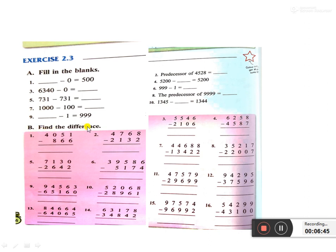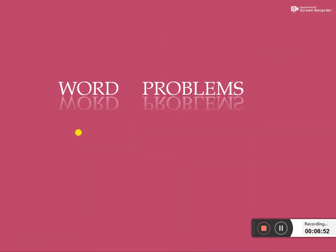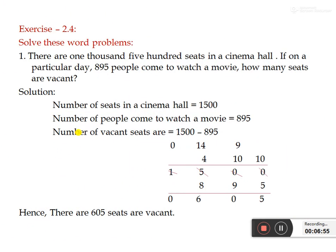Option B: find the difference — you have to do the subtraction. All the sums you have to do in your classwork copy, both A and B. Next, we are going to see word problems. Exercise 2.4 — all the word problems you have to do in your classwork copy. When you write, handwriting should be neat and clear. Exercise 2.3 and 2.4 — both in your classwork copy.